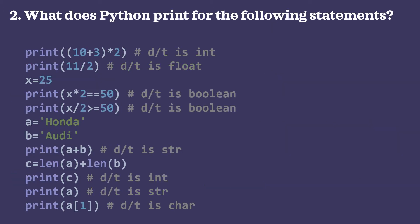Question number 2: what does Python print for the following statements? The first is print(10 + 3 * 2). As per operator precedence, 10 + 3 is 13, and 13 * 2 is 26. So it will print 26, which is an integer.